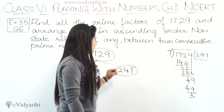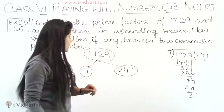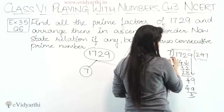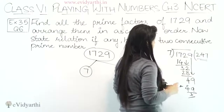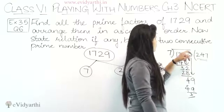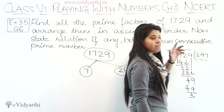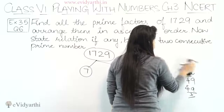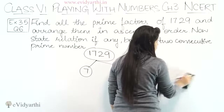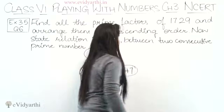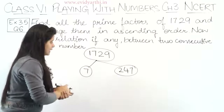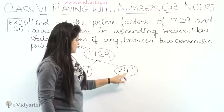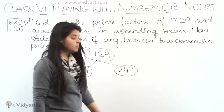Next we check 247. We check if 7 divides 247 — 7 × 35 = 245, so it doesn't divide evenly. 8 is not a prime so we skip it. Continuing, 9 is not on the table either.